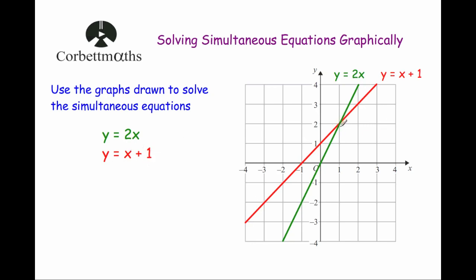As you can see, they meet clearly at this point here, 1, 2. And that means that our x value will be equal to 1, 1 across, and our y value will be equal to 2 because it's 2 up.